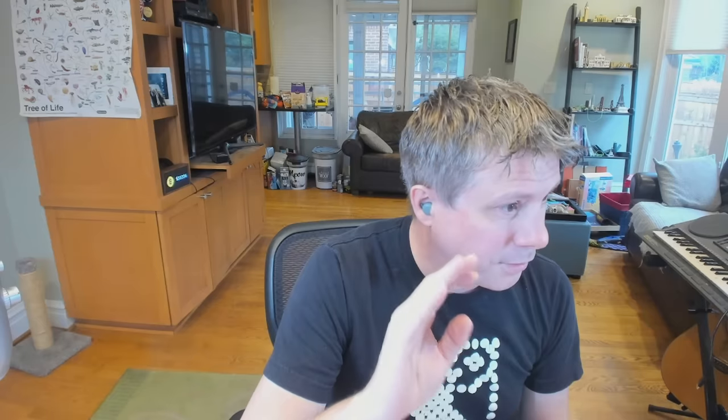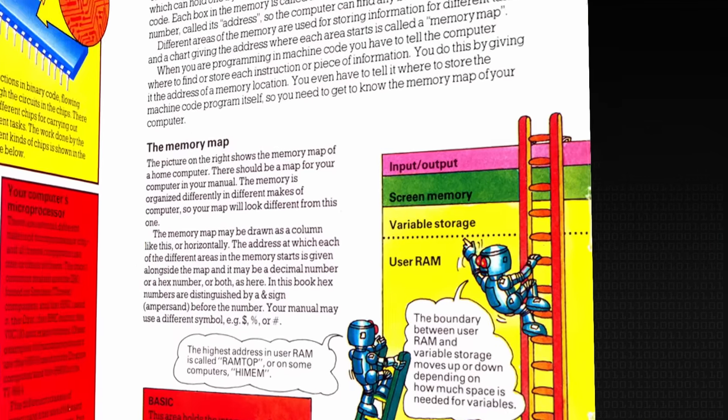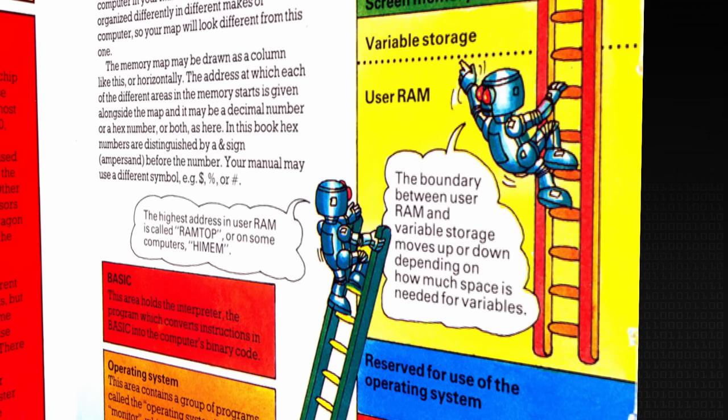The Usborne book — they've made the PDFs available so you can download them. They totally anthropomorphize the computer, explaining it in terms of a set of robots that live inside the computer. These robots have things they can do, and somehow the operation of these robots causes interesting things to happen in the outside world.